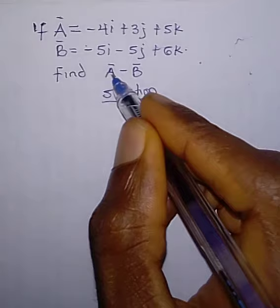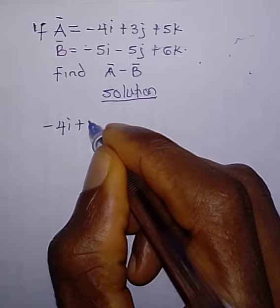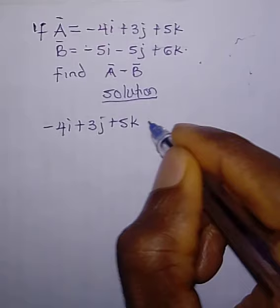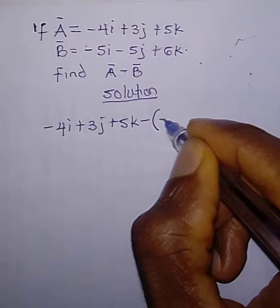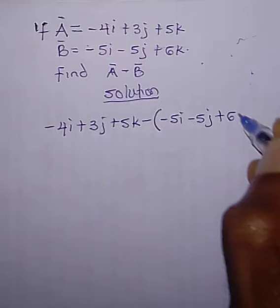Write vector A: minus 4i plus 3j plus 5k, minus — after the minus, put your brackets, then write vector B: minus 5i minus 5j plus 6k.